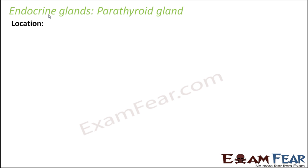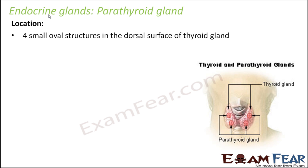The name itself is related to thyroid, so it is located quite close to the thyroid gland. These are four small oval structures on the dorsal surface of the thyroid gland. The thyroid gland has two lobes, and in each lobe you can see two small oval shaped structures. These structures are known as the parathyroid glands, located on the back side of the thyroid gland surface.